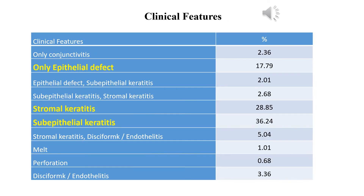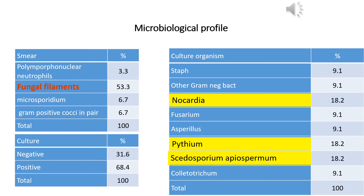Among the clinical features, superficial keratitis and stromal keratitis were more common. Very few patients presented with corneal melt and rarely progressed to corneal perforation. Looking at smear-positive keratitis, fungal filaments were found in the majority, followed by microsporidium and gram-positive cocci. Few smears showed presence of polymorphonuclear leukocytes. Among culture-positive cases, Pythium, Pseudomonas, and Nocardia were more common. Other organisms found were Fusarium, Aspergillus, and Staphylococcus.